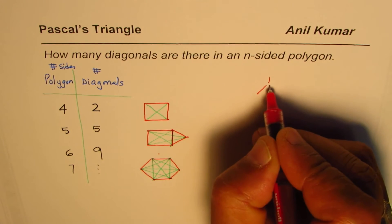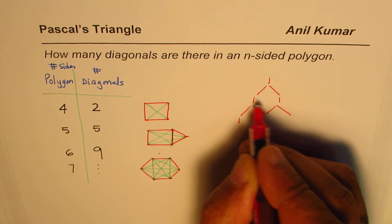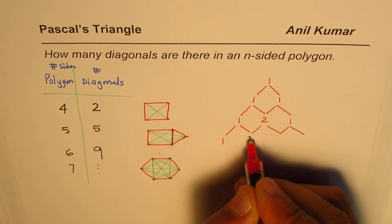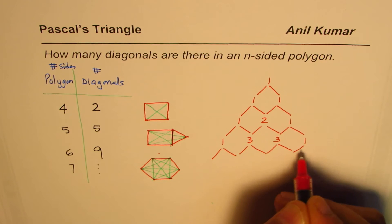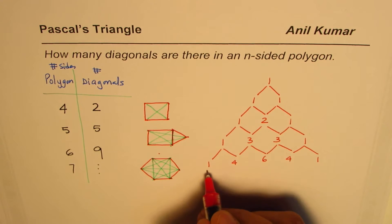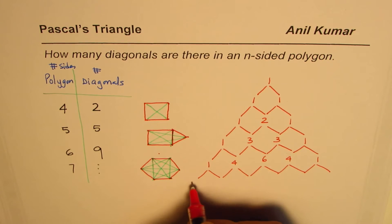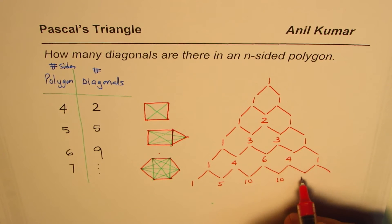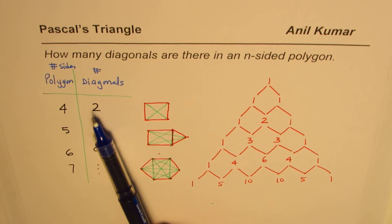Let's write down the numbers in Pascal's triangle. It always begins with 1. Then we get 1, 1. Combining: 1, 2, 1. Then 1, 3, 3, 1. Then 1, 4, 6, 4, 1. Continuing: 1, 5, 10, 10, 5, 1. Pascal's triangle is always symmetric.